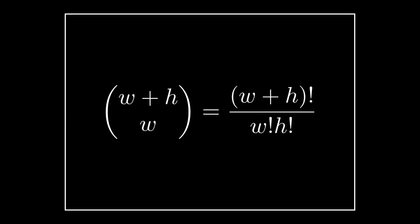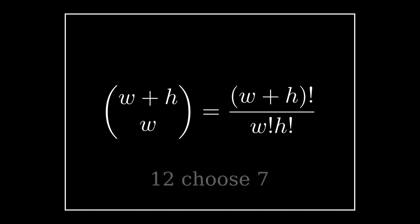Given the width and height of the Chomp board, we can thus count every possible game configuration by using the combinations formula for n choose k. So this will give us the size of our game state value array.